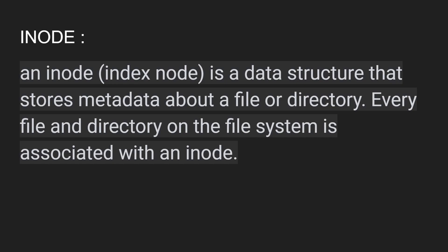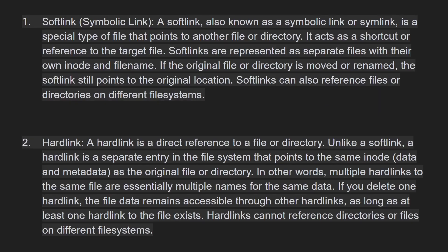Now we'll talk about the soft link and the hard link. A soft link, also known as a symbolic link or symlink, is a special type of file that points to another file or a directory — it acts as a shortcut or a reference to the target file. Soft links are represented as separate files with their own inode. If the original file or directory is moved or renamed, the soft link still points to the original location. Soft links can also reference a file or directory on a different file system.